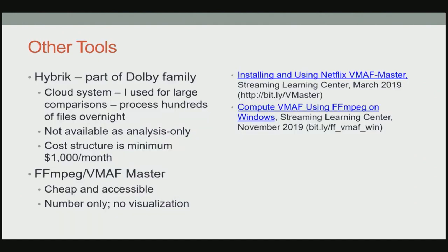You can get some of these numbers through open source tools — you can compute VMAF with FFmpeg and VMAF Master, and there are two articles on my website with the code and instructions. The problem with using open source tools is you get the numbers only; you don't get the ability to look at the actual frames beneath the numbers. I find that very, very critical.